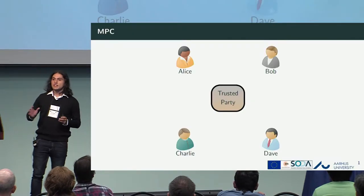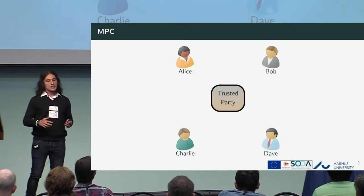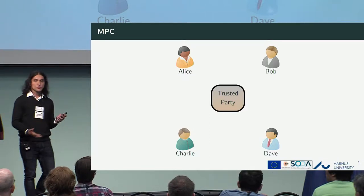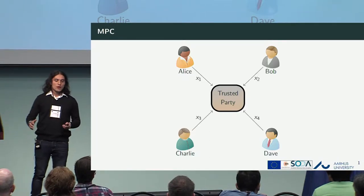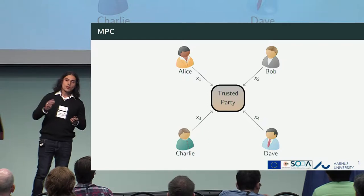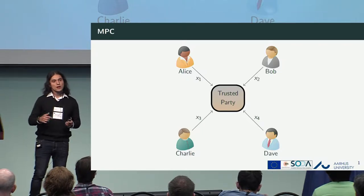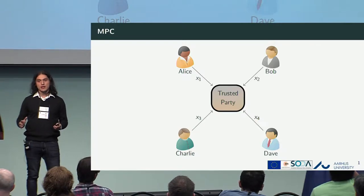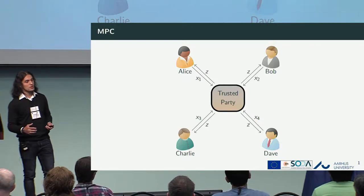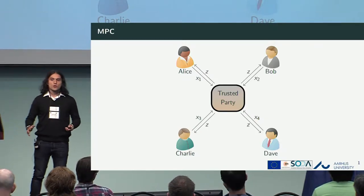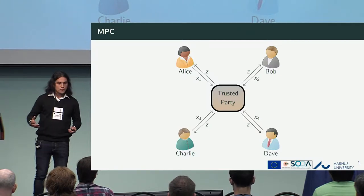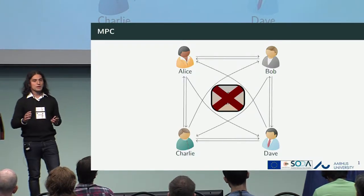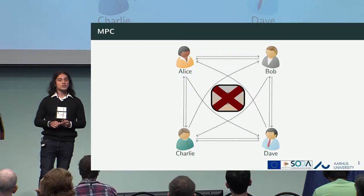Very quickly, imagine a setting where you have four parties — Alice, Bob, Charlie, and Dave — and each one of them has a secret, X1 up to X4. They want to compute a function on this input. One way to do this is everyone sends their inputs to a trusted party who promises not to reveal anything else but the actual output of this function, Z. What we want in multiparty computation is to achieve the same sort of security but involving only communication between the parties.